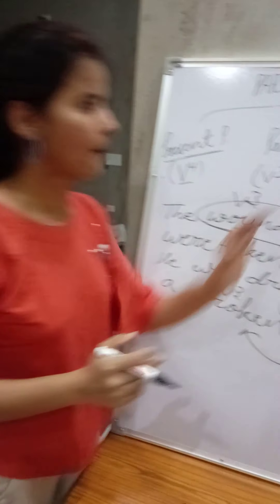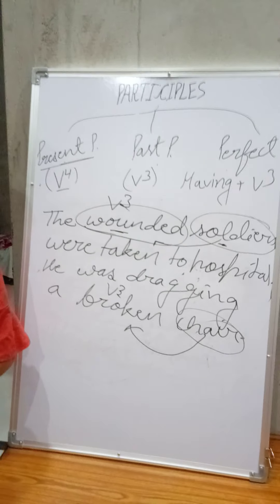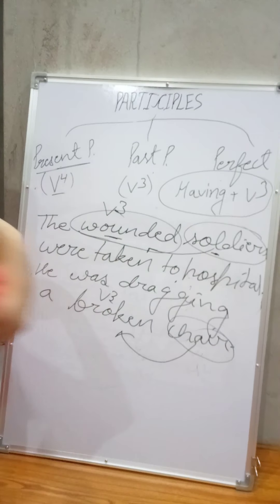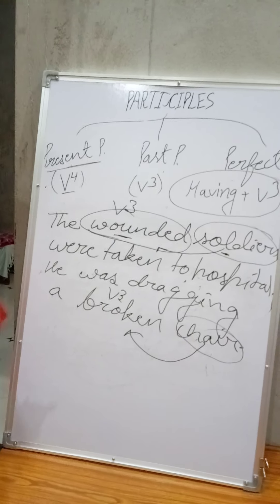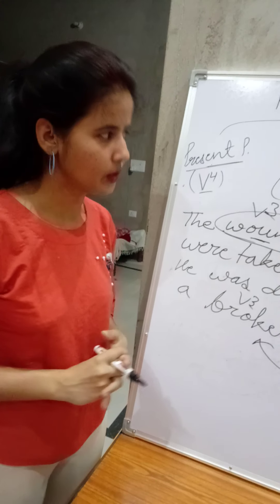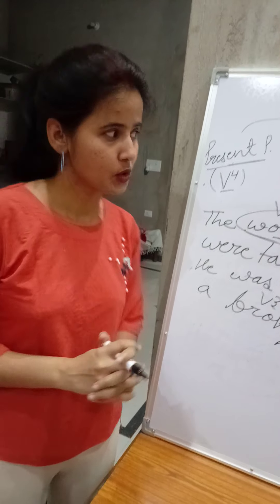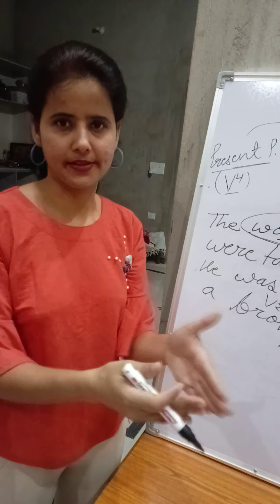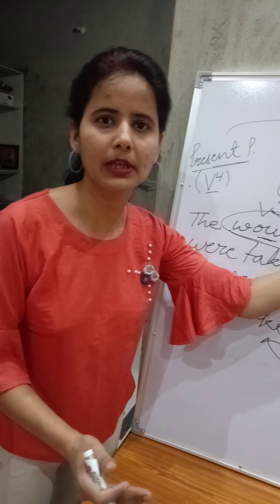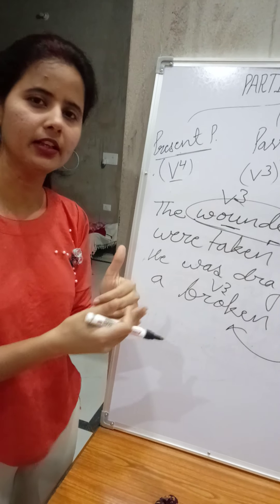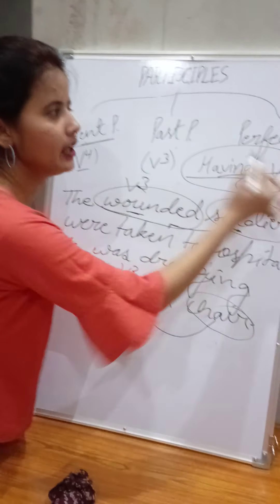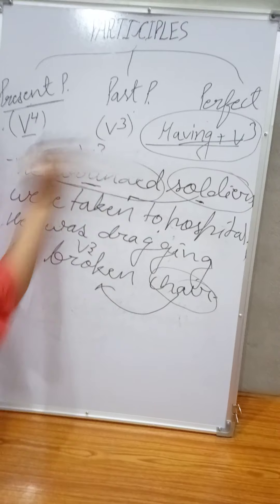Now the third type is perfect participle. If two actions occurred simultaneously, the action which occurred first takes having plus V3, and the action which occurred later uses simple past. So having plus V3 will be called perfect participle.